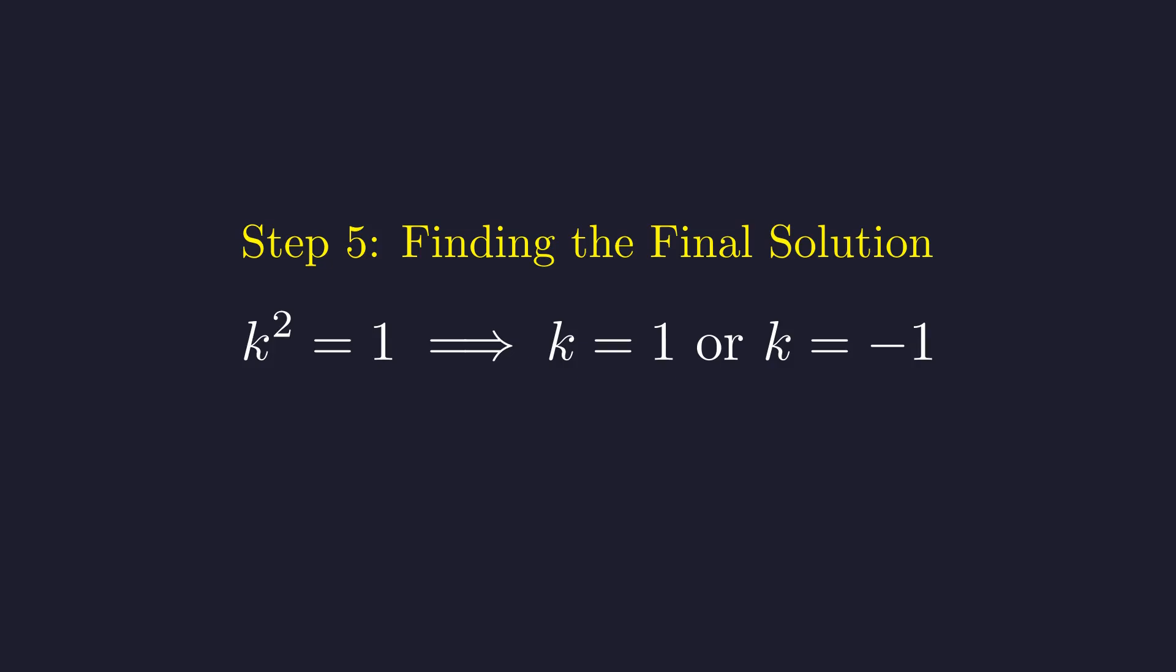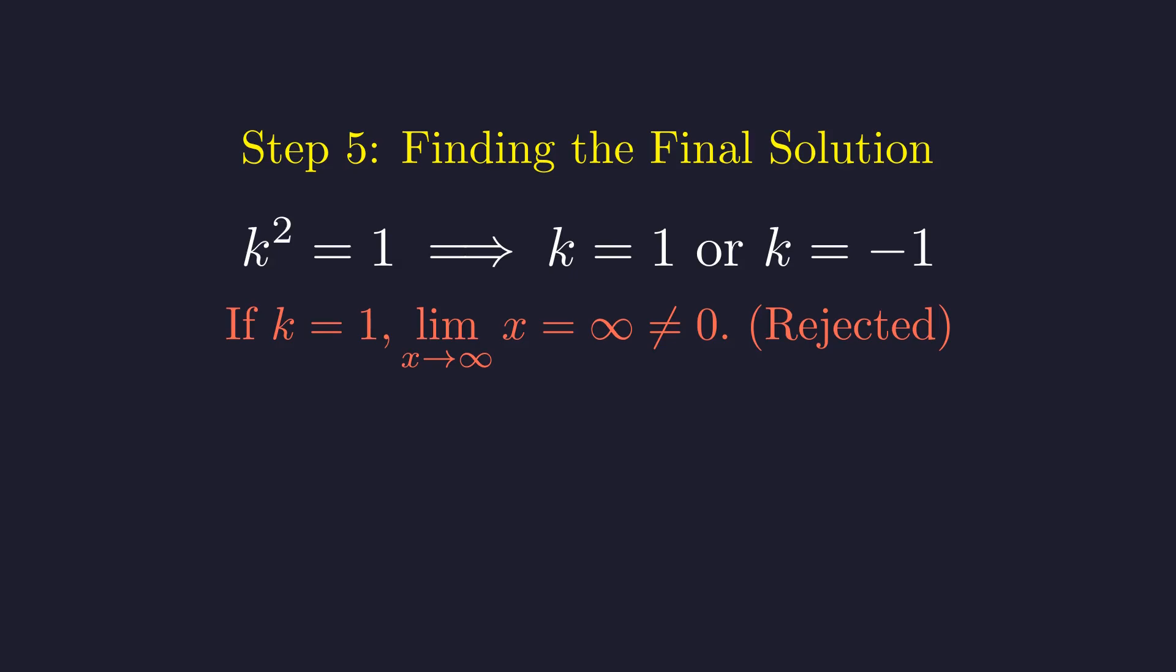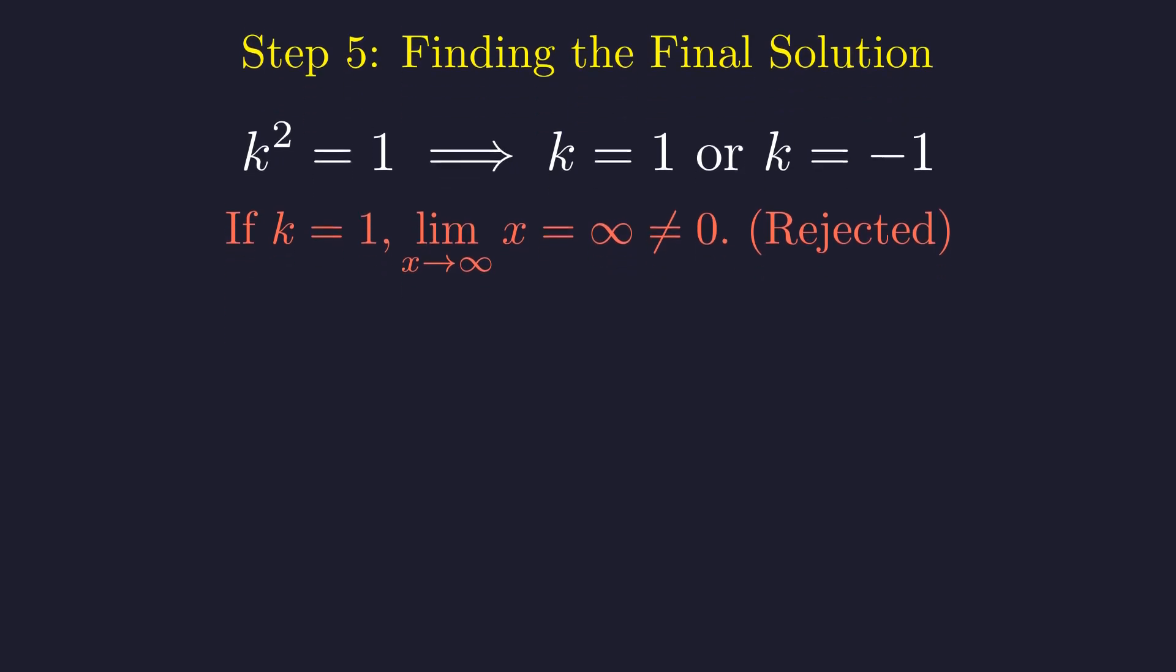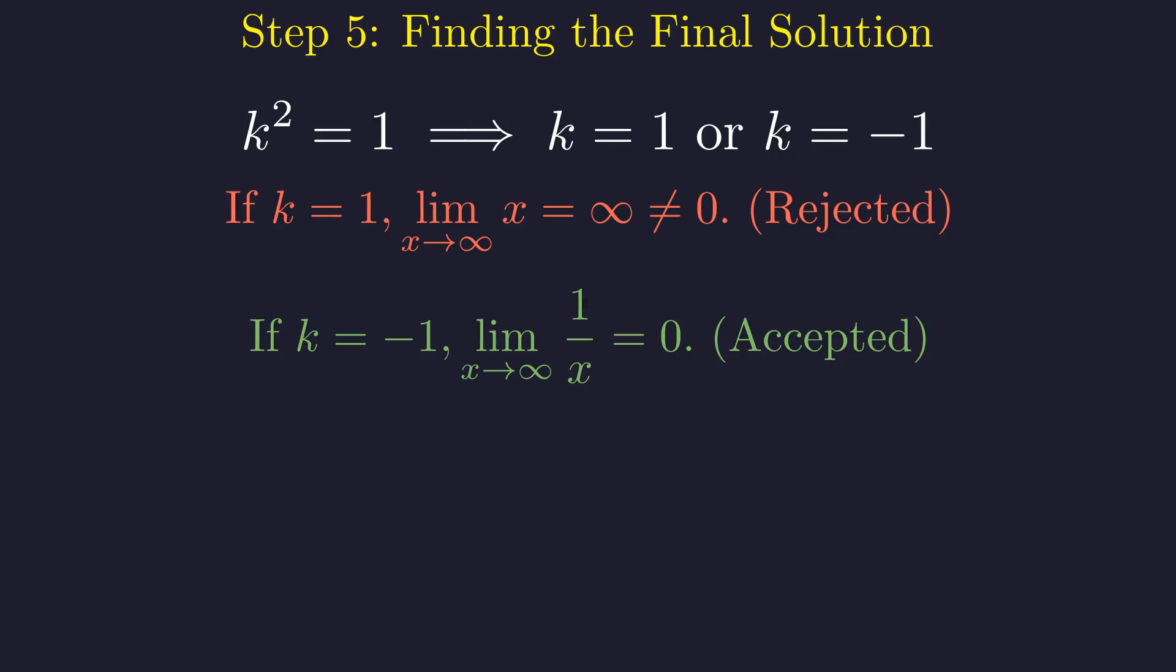We use the limit condition to decide between them. If k equals 1, then f of x is just x, whose limit as x grows is infinity. This violates our condition. If k equals negative 1, then f of x is 1 over x, whose limit as x grows is 0. Perfect! This is our solution.